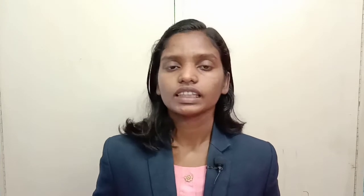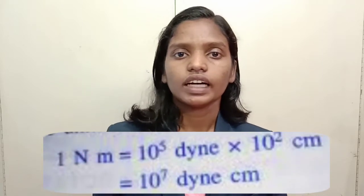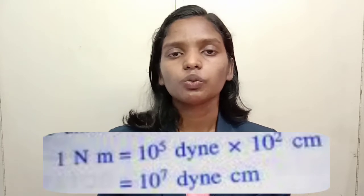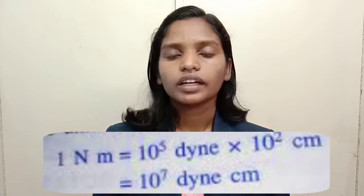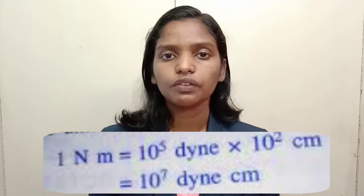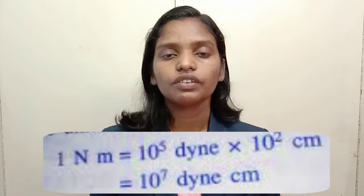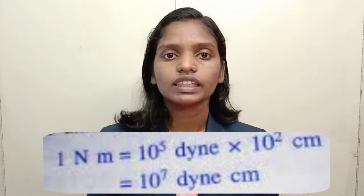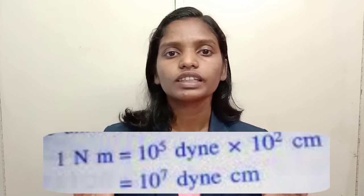Since torque depends on force and perpendicular distance, the SI unit is newton meter (N·m). In the CGS system, the unit of force is dyne and the unit of distance is centimeter, so the CGS unit of torque is dyne centimeter. The conversion is: 1 newton meter equals 10 to the power 5 dynes times 100 centimeters, which gives 10 to the power 7 dyne centimeters.